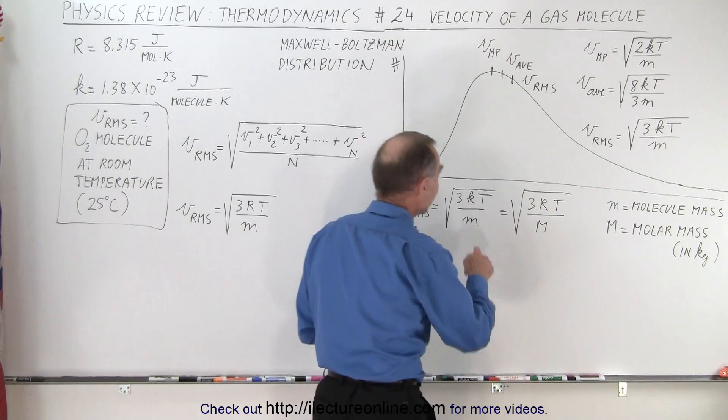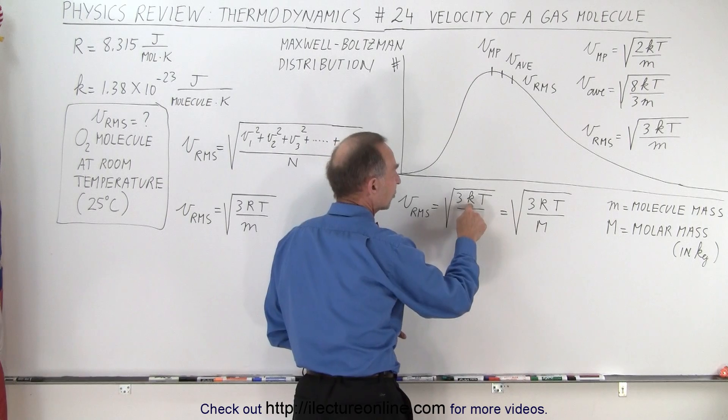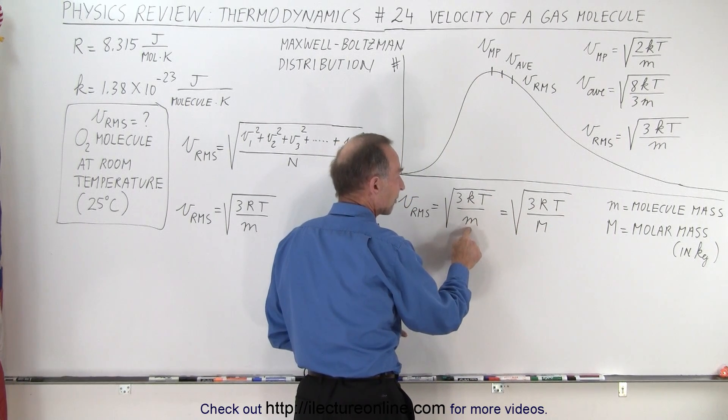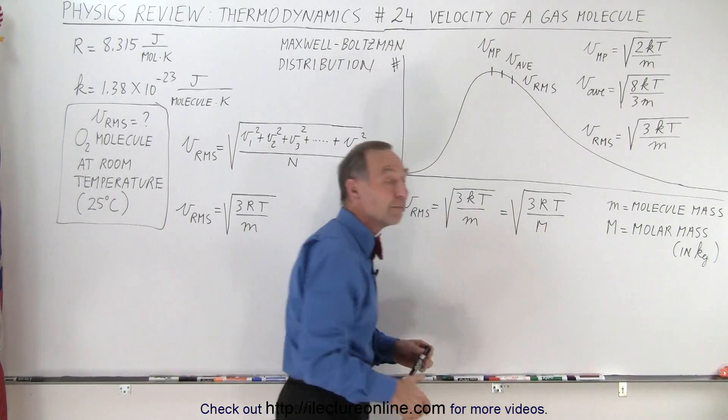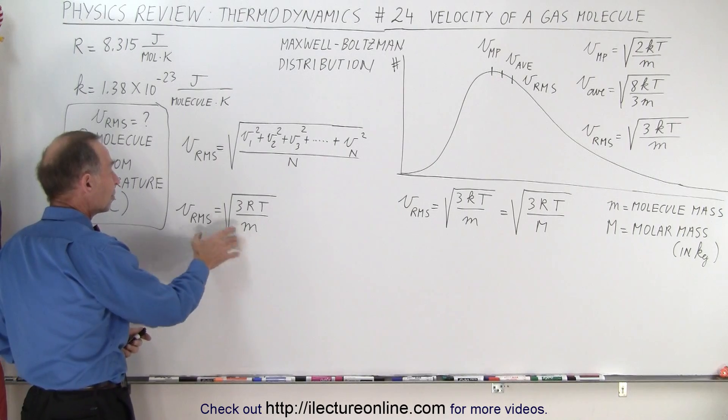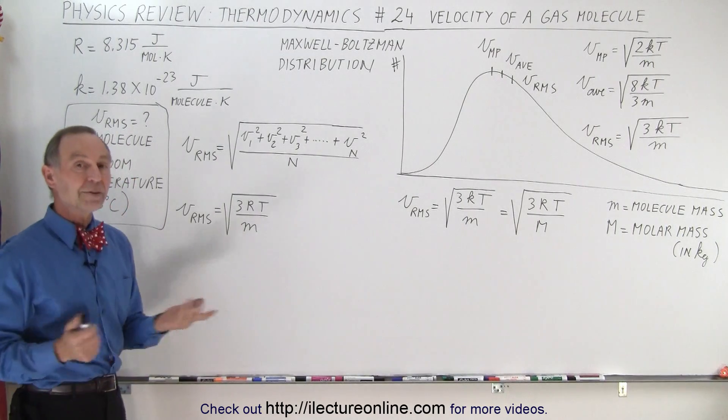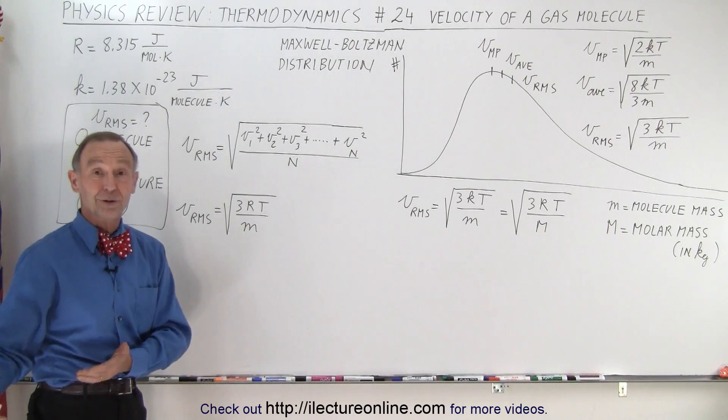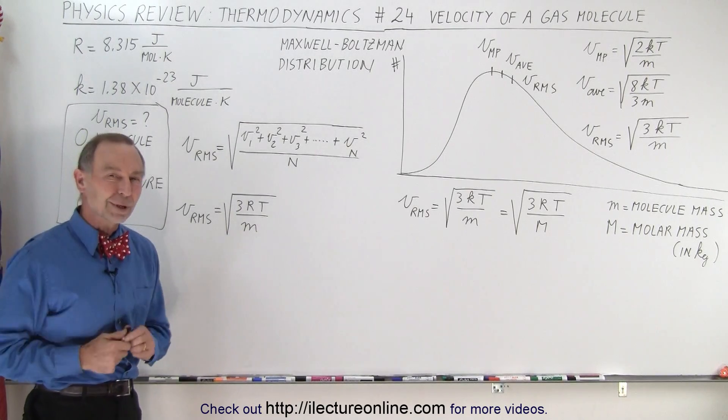So essentially, multiply k by Avogadro's number to get R, and multiply the mass of a single molecule times Avogadro's number to get the mass of a mole of molecules. And so what we're going to do then is simply use that equation to find the RMS velocity of an oxygen molecule. Once you have the equation, your physics is done. Now you just plug in the numbers to crank through the algebra.